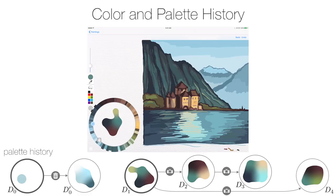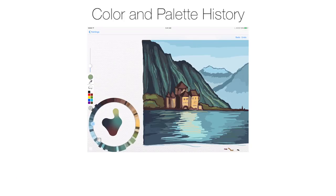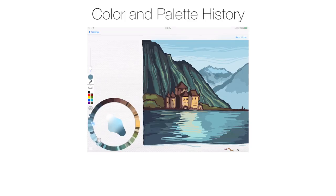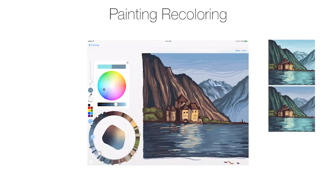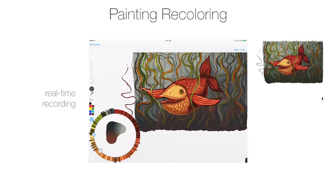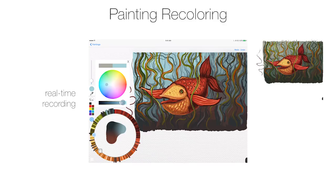Thus, one can seamlessly switch between working on the castle, the green hill, and the background using their respective palettes. Palette history also allows an artist to step back in time and change past color choices. In the recoloring mode, we propagate palette changes throughout palette history, automatically repainting the artwork. Such edits can be made at any time, interleaved with painting.